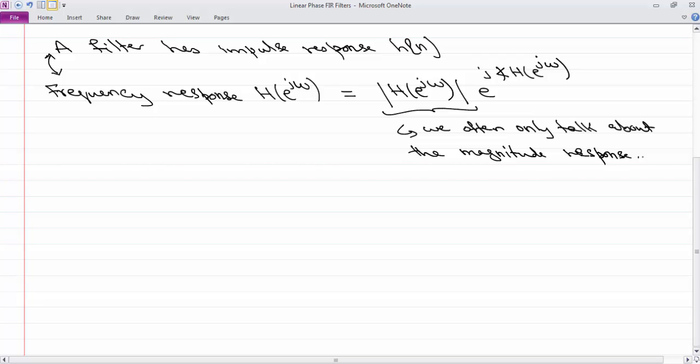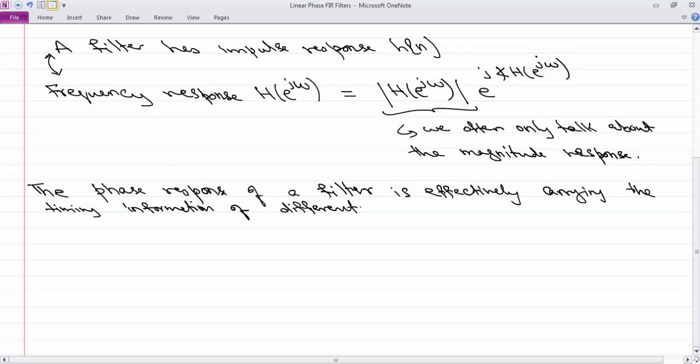So that's the view you should take with respect to magnitude response, which tells you, you input some frequencies and you get back the same frequencies, but it doesn't tell you what is the order in which you received those frequencies. So the phase response of a filter is effectively carrying the timing information of different frequencies and in most cases, it cannot be ignored.